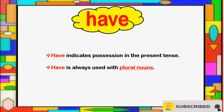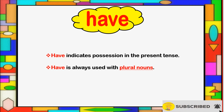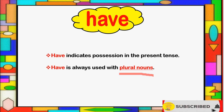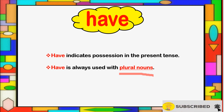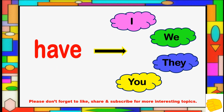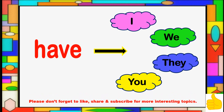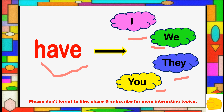'Have' also indicates possession in the present tense, same as 'has'. But 'have' is always used with plural nouns, not with singular nouns. Secondly, 'have' always goes with first or second person pronouns — like 'I', 'you', 'we', 'they'. Whenever you get these words, you have to use 'have'.